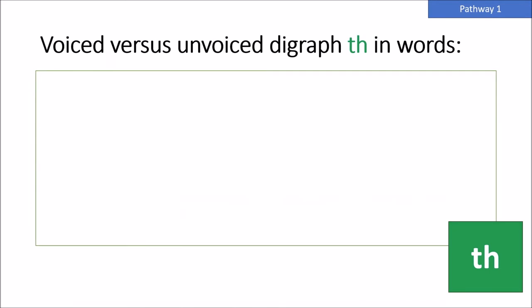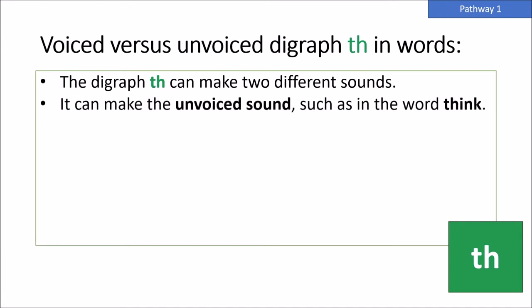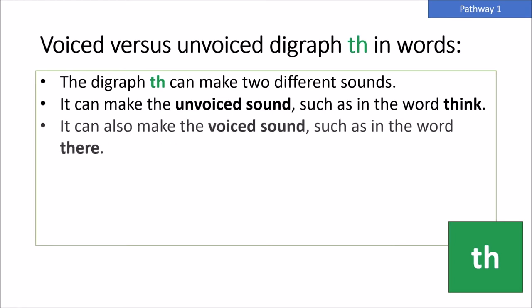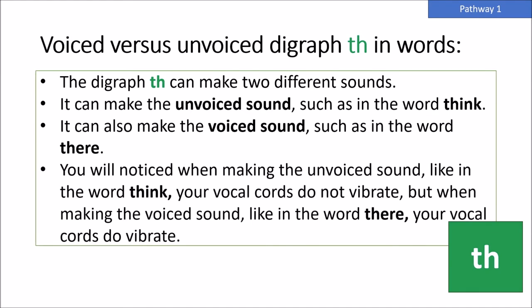Voiced versus unvoiced digraph TH in words. The digraph TH can make two different sounds. It can make the unvoiced sound, such as in the word 'think.' It can also make the voiced sound, such as in the word 'there.' You will notice when making the unvoiced sound, like in 'think,' your vocal cords do not vibrate. But when making the voiced sound, like in 'there,' your vocal cords do vibrate.